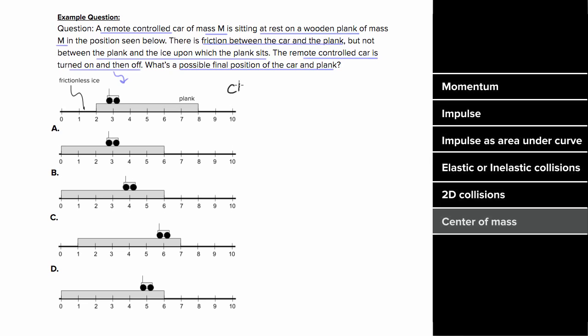Now the remote control car is turned on and off. What would be a possible final position of the car and the plank? Now because the car is at rest and the plank is at rest, that means the center of mass of this system is also at rest. And since there's no net force on this system, the center of mass is gonna have to remain at rest.